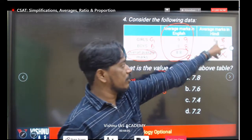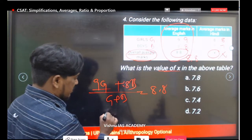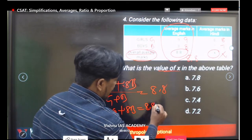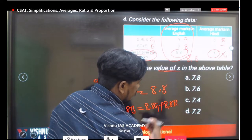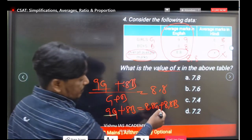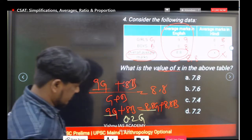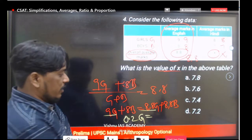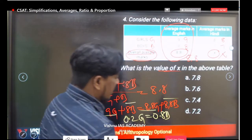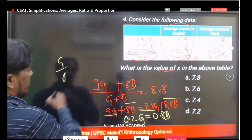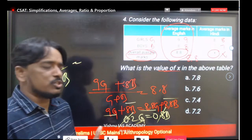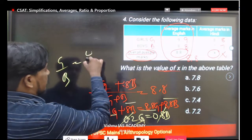Simplifying: 9G plus 8B equals 8.8G plus 8.8B. This gives 0.2G equals 0.8B. Therefore the girls-to-boys ratio G to B equals 0.8 to 0.2, which simplifies to 4 is to 1.